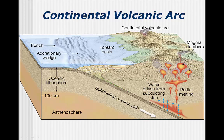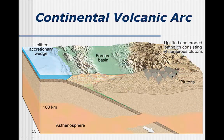When a continental and oceanic plate collide, a continental volcanic arc is formed. The process is very similar to when two oceanic plates converge, but a continental plate has a greater ability to scrape sediments off the oceanic plate, creating an accretionary wedge. As the accretionary wedge continues to grow, it can be pushed above sea level, and the forearc area gets filled in with sediment coming from the eroded uplifted accretionary wedge and the mountains created earlier.